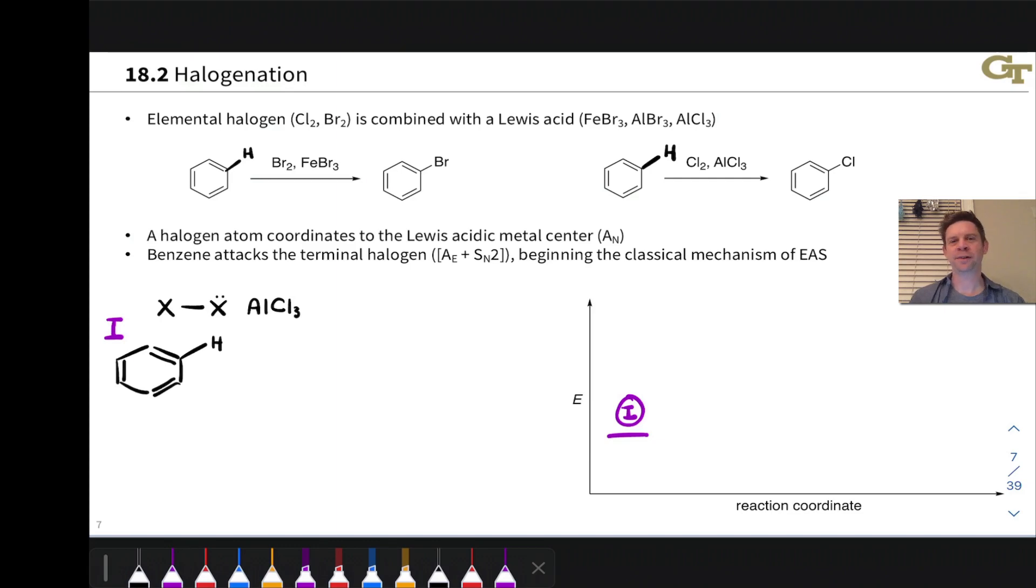This video is all about the electrophilic halogenation of benzenes and related aromatic compounds through an electrophilic aromatic substitution mechanism. We've seen that benzene doesn't react with Br2, but if we add a Lewis acid catalyst to the reaction mixture, we can get benzene to react with Br2 in a substitution process.